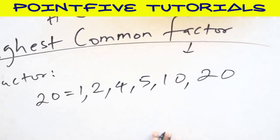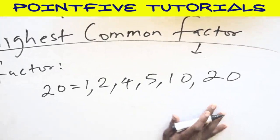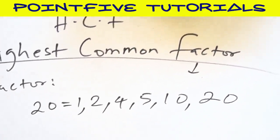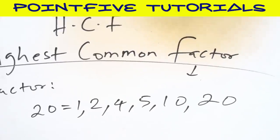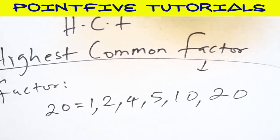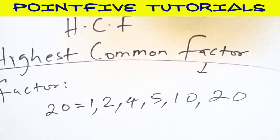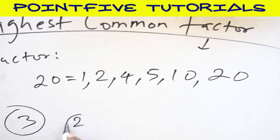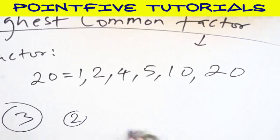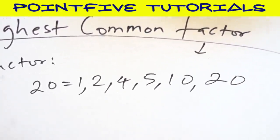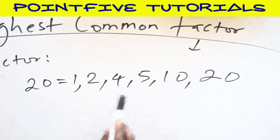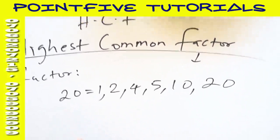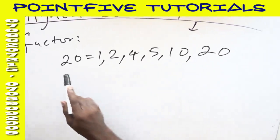Factors start from 1 and end with the same number. So these are numbers that can divide 20 without remainder. If you put 3 here, 3 cannot divide 20 without remainder. There must be remainder. 4 is said to be a factor of 20. 5 is said to be a factor of 20.